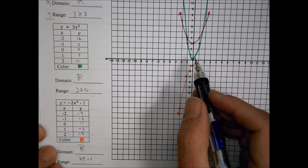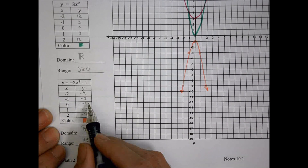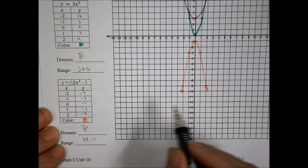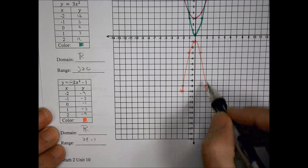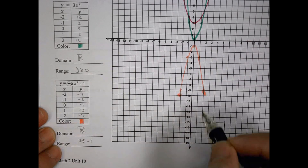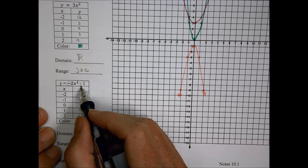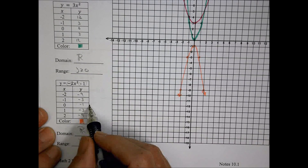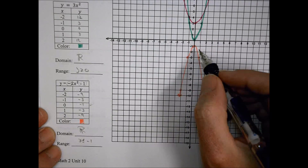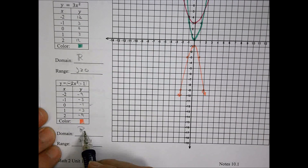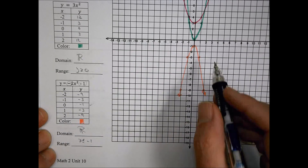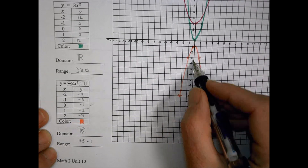For the last one, you have values like negative nine, negative three, negative one. We see that because it has a negative sign in front of the quadratic, that tells us the direction — it's going to be opening downward. It also has a value of negative one, which tells you where we're going to have our maximum or minimum. In this case it becomes a maximum because it's going the opposite way. All values of x are going to work for our domain, and the range is going to be y less than or equal to one.